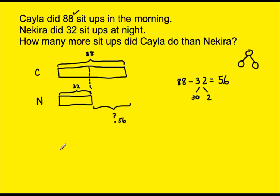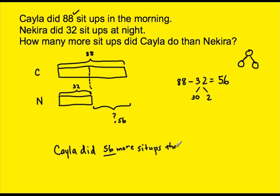Before you finish, even though you have the number sentence complete, you need to put it in a complete sentence. How many more sit-ups did Kyla do than Nakira? Kyla did 56 more sit-ups than Nakira. So here we have three components of a proper bar model: first you draw the model, then you write a number sentence and solve to find the answer, then you answer the actual question in a complete sentence. That is a comparing problem. For more information on other bar models, please look at the other videos on part-whole.